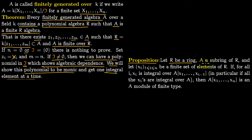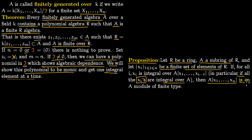The proposition: let A be a ring, R a subring of A, and {x1, x2, ..., xn} a finite set of elements of A. If for all i, xi is integral over R[x1, x2, ..., x_{i-1}] — in particular if all xi are integral over R — then R[x1, ..., xn] is an R-module of finite type. That is precisely what we are going to do.